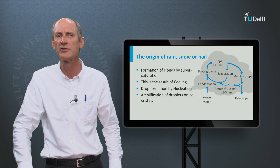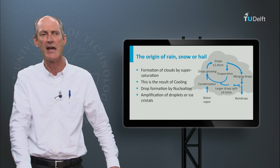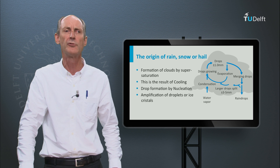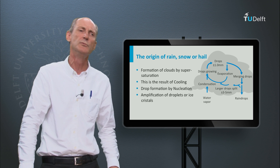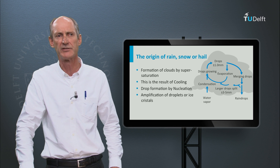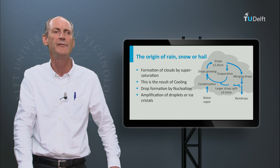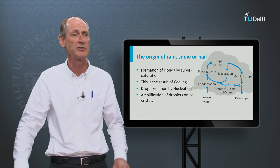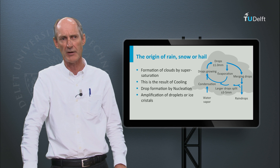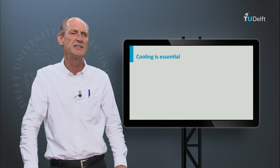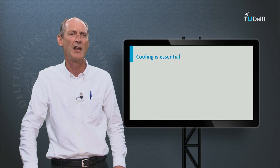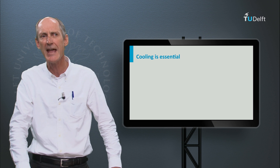Condensation requires little crystals or dust particles for nucleation. Turbulence causes the droplets to grow, as drops move up and down and collide with other droplets, until they are too heavy to be sustained by turbulence or the uplift of the air and they drop to the ground. So we see that cooling is essential and we also notice that clouds are formed by rising air.